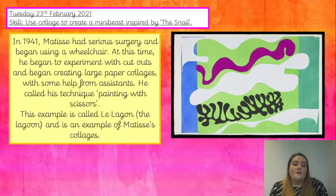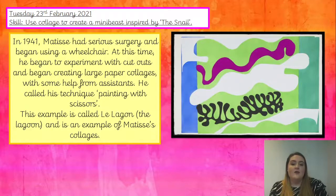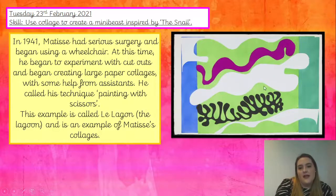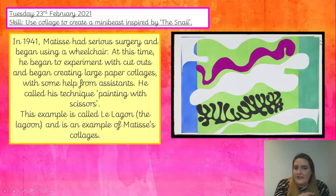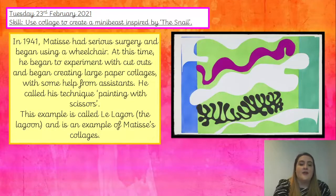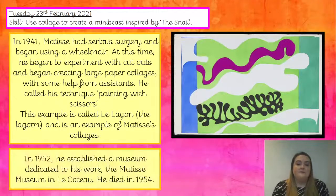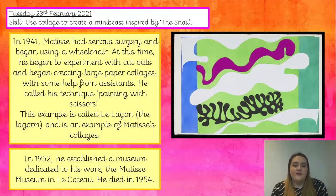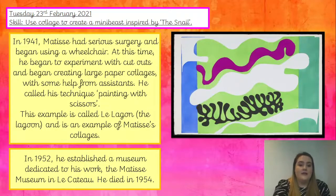This example is called Le Lagoon and is an example of Matisse's collages. We can see some lovely bright purple in the paper cutouts — so there's still a similarity with his paintings, lots of lovely bright colours, but he's just using paper instead. In 1952 he established a museum dedicated to his work called the Matisse Museum in Lacatou. He died in 1954.